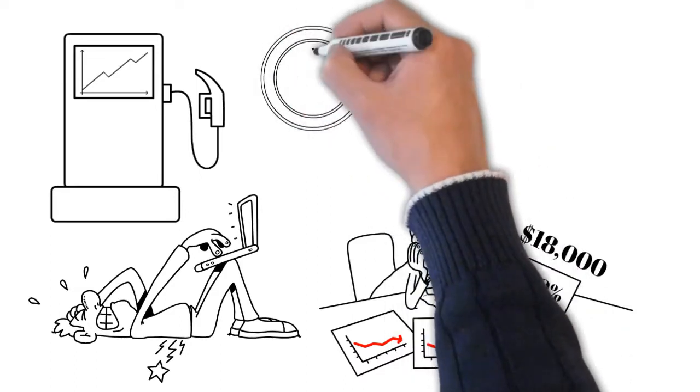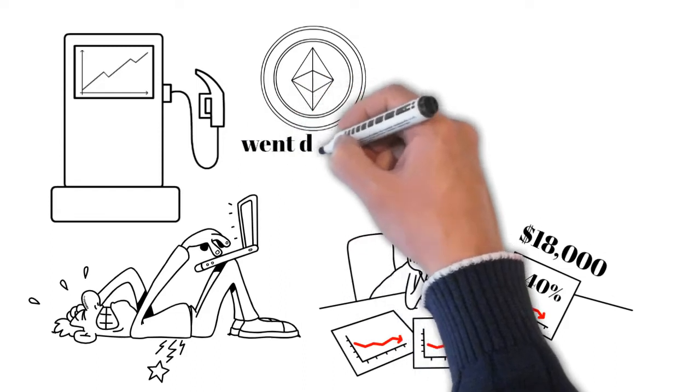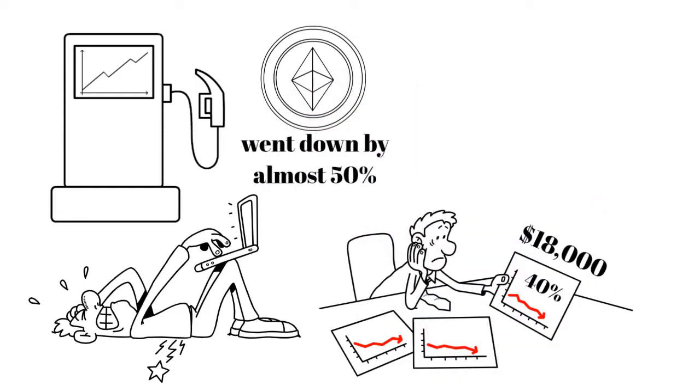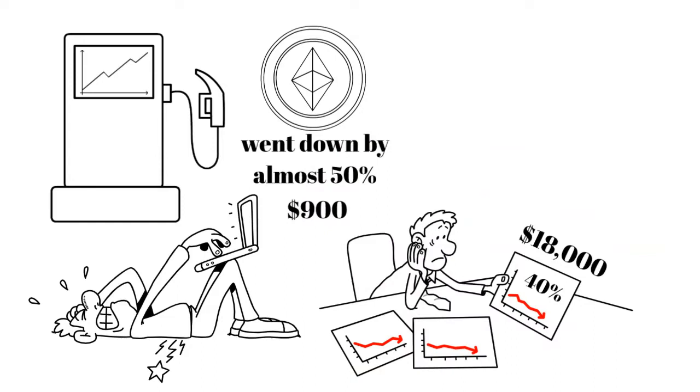The price of Ethereum, the second biggest cryptocurrency, also plunged. It went down by almost 50%, reaching a low of roughly $900 at one time.